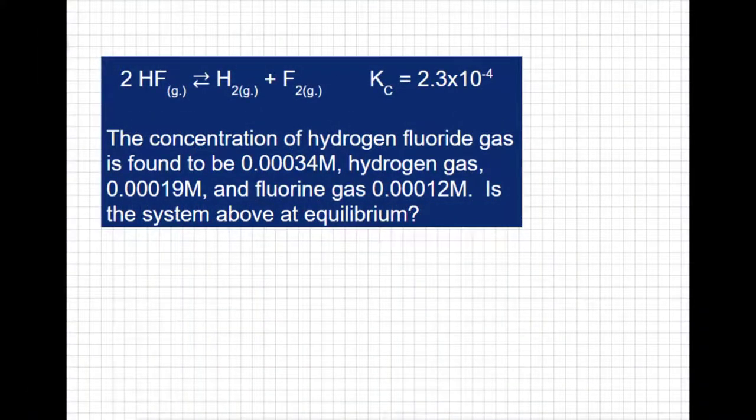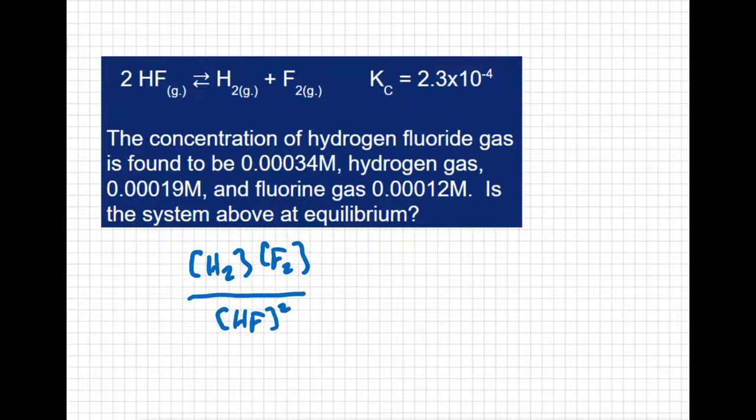So to figure out if we're at equilibrium or not, I'm going to set up an equilibrium expression like we've been doing for a while now. I'm going to say concentration of hydrogen times the concentration of fluorine all over the concentration of the hydrogen fluoride squared. But I'm not going to set that equal to K. I'm going to set that equal to Q. Q is our reaction quotient. It's a test to see whether we're at equilibrium or not.